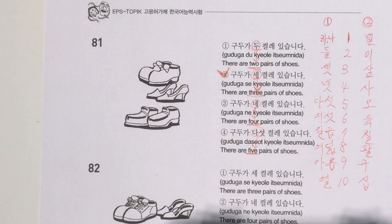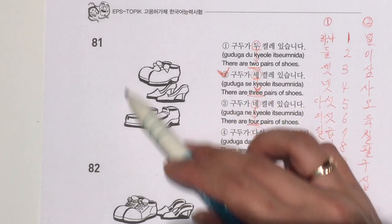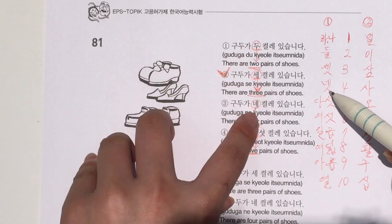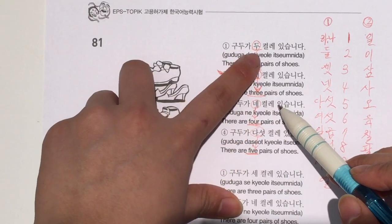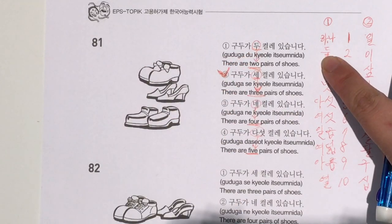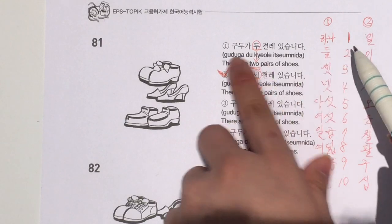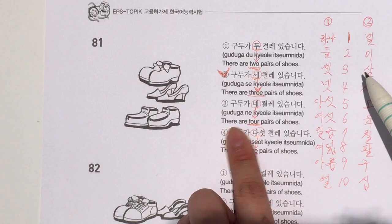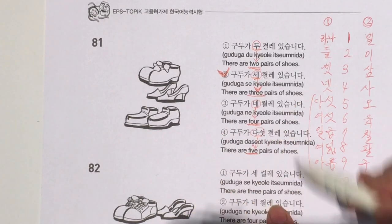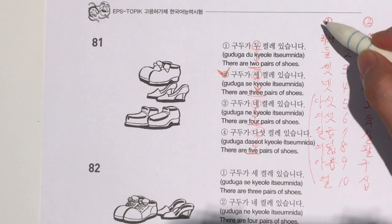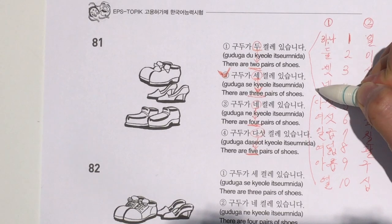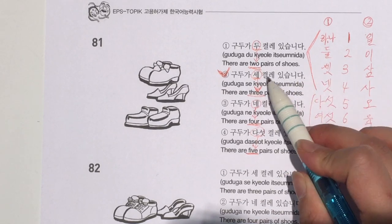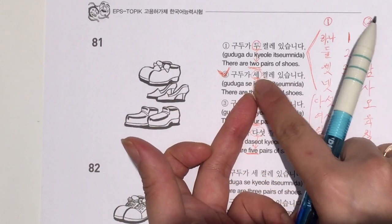Here there are three of them — three — and this means 셋. Now, 하나, 둘, 셋, 넷 work differently in sentences. We do not pronounce the final ㄹ in 둘, and we do not pronounce the final ㅅ in 셋 or 넷 when used in sentences. So three is 셋, but in a sentence we just don't pronounce the ㅅ: 세 켤레 있습니다.